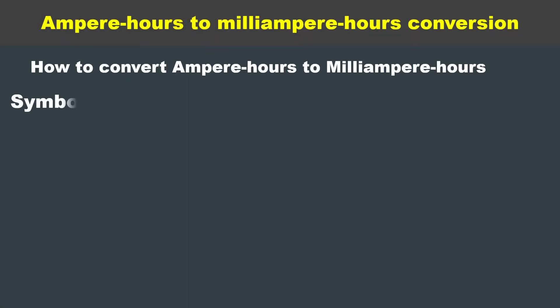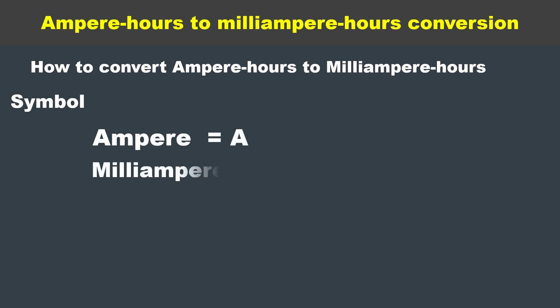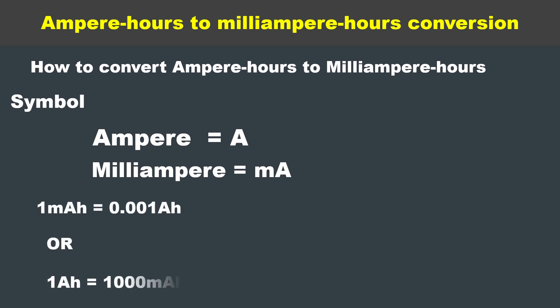Ampere hour is denoted by A and milliampere hour is denoted by mA. 1 milliampere hour is equal to 0.001 ampere hour, or 1 ampere hour is equal to 1000 milliampere hours.